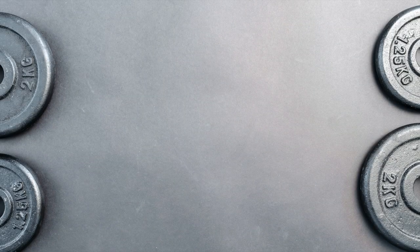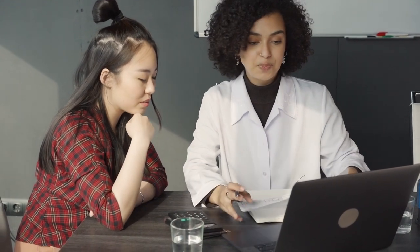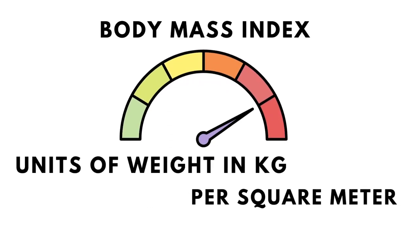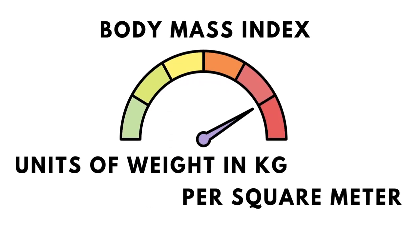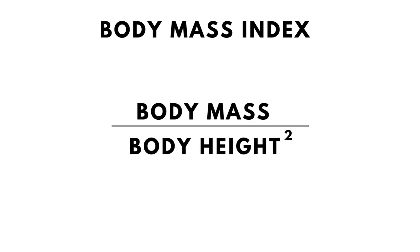How can you calculate your own BMI or body mass index? We will show you how you can calculate it and show you the BMI scale. Know that there are lots of online calculators out there that can help you calculate your own BMI easily. BMI is expressed in units of weight in kilograms per square meter, and is defined as the body mass divided by the square of the body height.